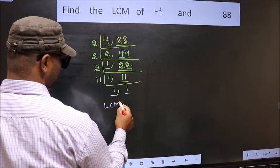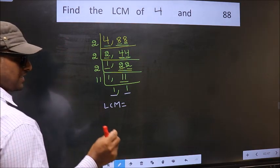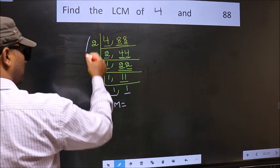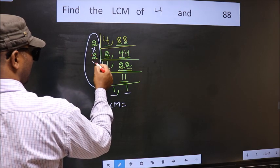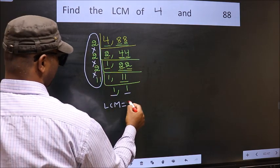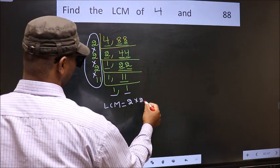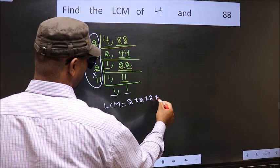So our LCM is, LCM is the product of these numbers. That is 2 into 2 into 2 into 11.